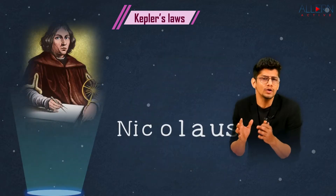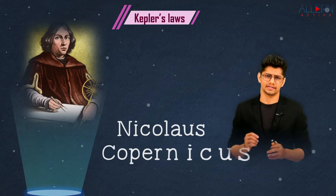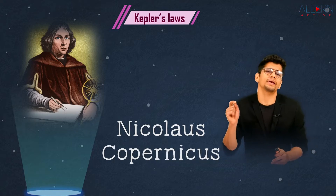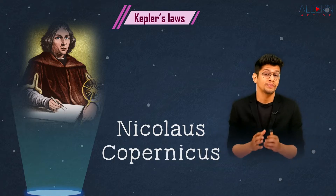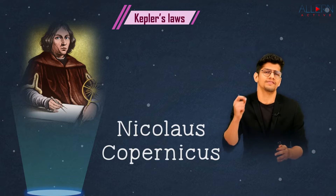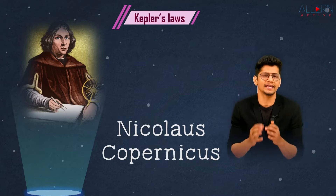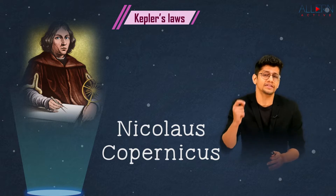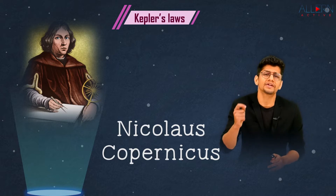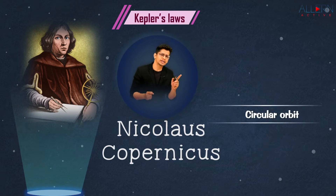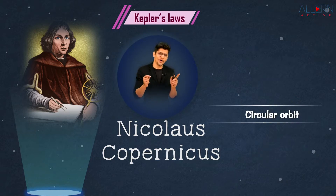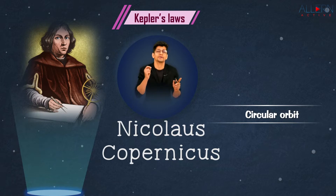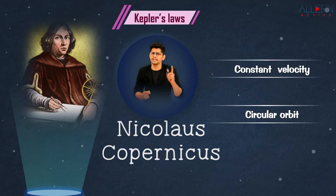There was a person named Nicholas Copernicus who told everybody that no, everything does not revolve around the Earth — everything revolves around the Sun. And whenever everything revolves around the Sun, it revolves in a circular orbit with a constant velocity.